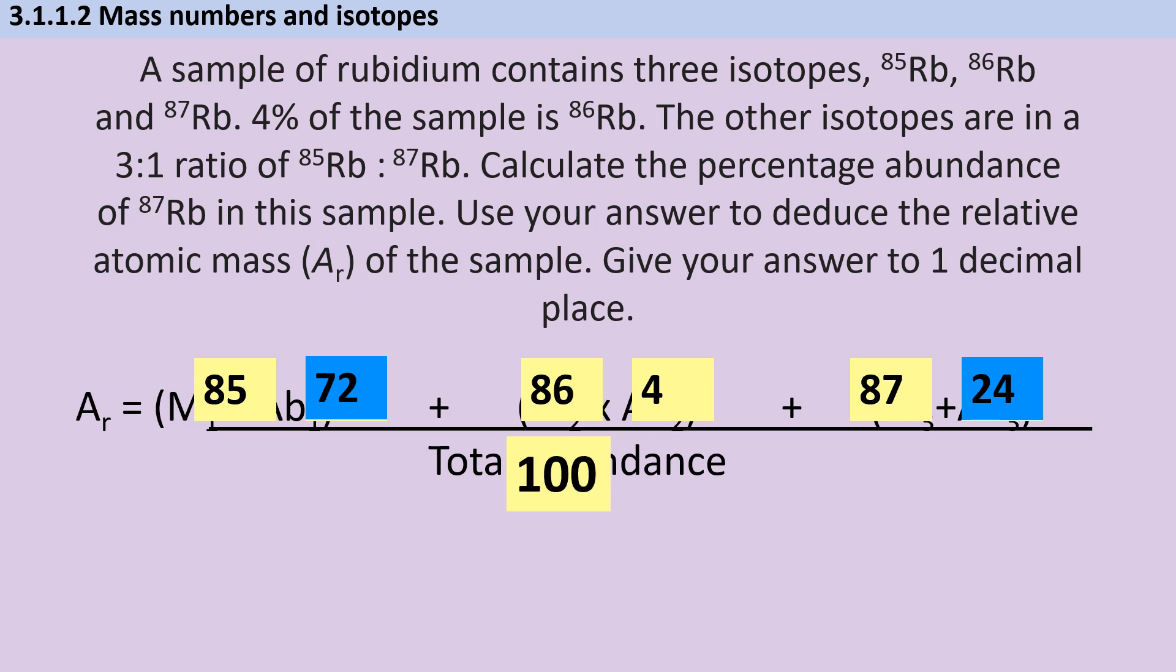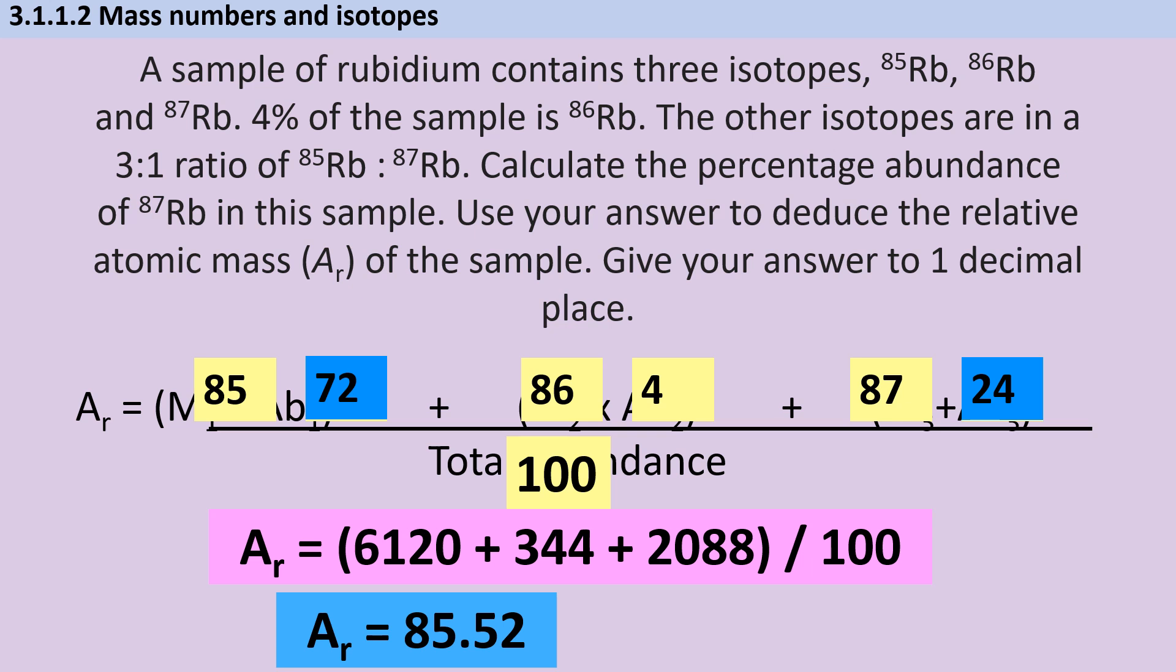Now I can calculate what 85 times 72 is, 86 times 4 is, and 87 times 24 is. And I add those all together and then divide by 100 because my total abundance is 100. And that gives me a relative atomic mass of 85.52. But remember, we need to give our relative atomic mass to one decimal place. So our final answer is going to be 85.5.